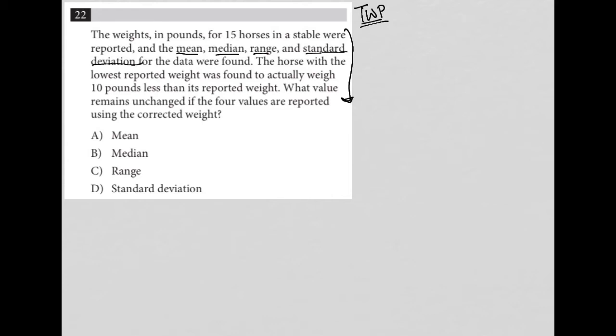The range and the standard deviation. So the next sentence says the horse with the lowest reported weight was found to actually weigh 10 pounds less than its reported weight. Okay, so I got that. Still really nothing to write down. Just trying to understand what I'm reading. We have 15 weights. The horse with the lowest weight came in at some unknown as of right now weight. But in reality, it was actually 10 pounds less than the reported weight. What value remains unchanged in the four values? I'm sorry, if the four values are reported using the corrected weight.